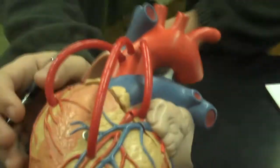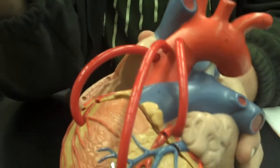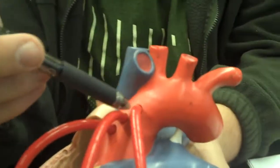All right, so our circulatory vessels associated with the heart. All right, the first thing we have is the arch of the aorta.